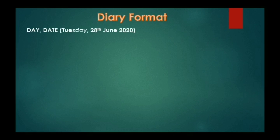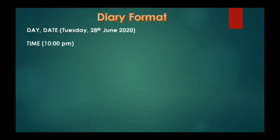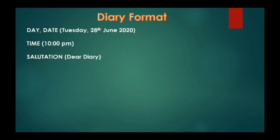Next, we will have a look at the format of a diary. Firstly, on the top left side of the page, you will have to write down the date of writing the diary. Then, leave one line and in the next line write down the time of writing the diary. The time has to be written like this: 10:00 PM, that is 10 o'clock PM at night. And then, again leave a line and write the salutation, that is a kind of greeting to the one you are addressing, that is your diary.